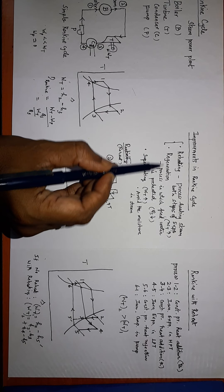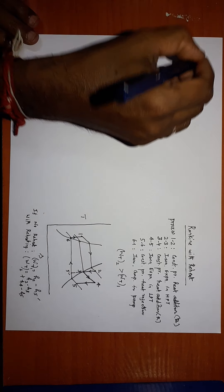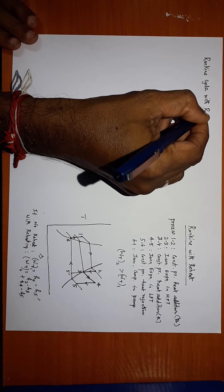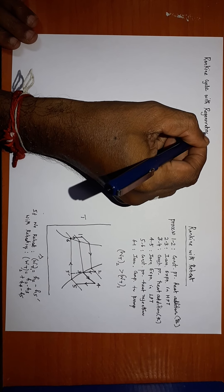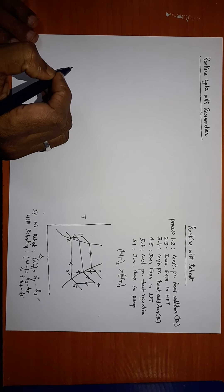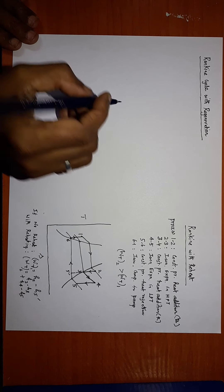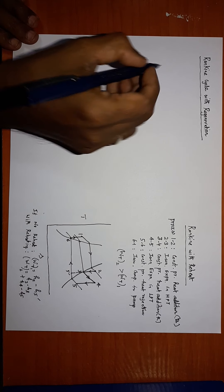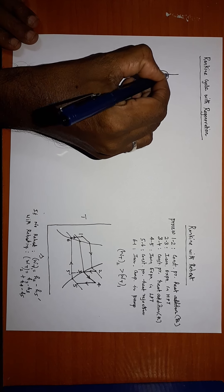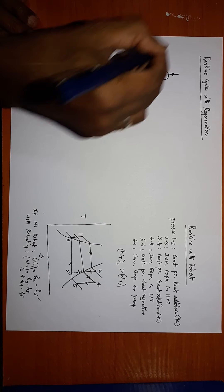The next topic is the Rankine cycle with regeneration. Regeneration is defined as the process of preheating the feed water before supplying it to the boiler. I will draw the flow circuit first. I have a boiler where heat is added and water is converted to steam.